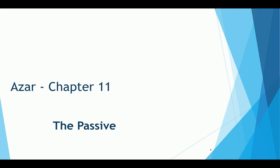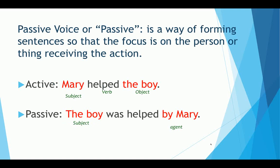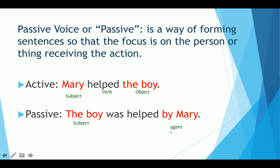Azar Chapter 11 - The Passive. Passive voice is a way of forming sentences so that the focus is on the person or thing receiving the action. In the active voice, 'Mary helped the boy' — Mary is the subject and the boy is the object. In the passive voice, the boy becomes the focus: 'The boy was helped by Mary.' The noun that follows 'by' is called the agent. Here, Mary is the agent.